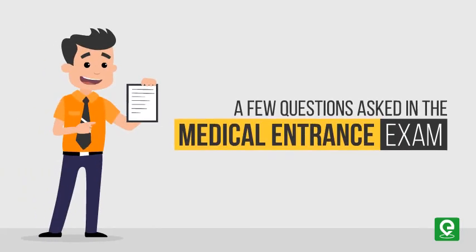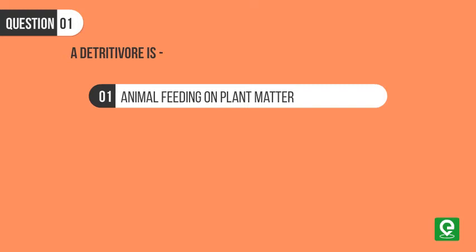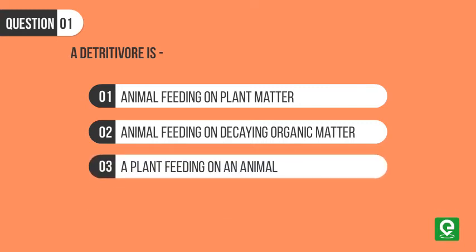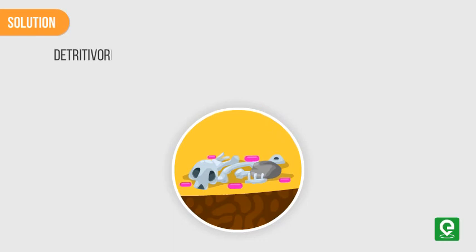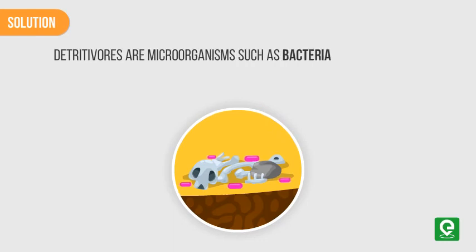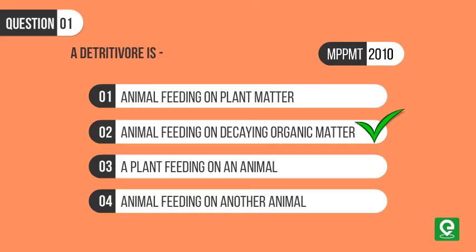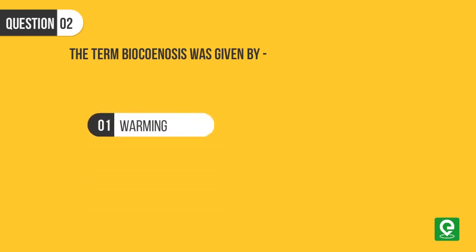Let's answer a few questions asked in the medical entrance exam. Question one: A detritivore is — one, an animal feeding on plant matter; two, an animal feeding on decaying organic matter; three, a plant feeding on an animal; or four, an animal feeding on another animal. This question was asked in MPPMT 2010. Solution: Detritivores are microorganisms such as bacteria and fungi that feed on decaying organic matter. Hence, option two is the correct answer.